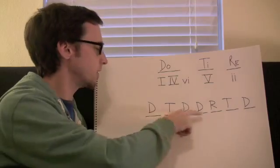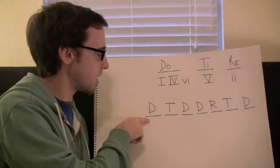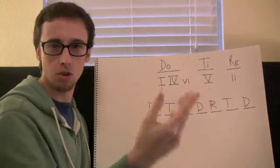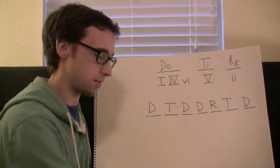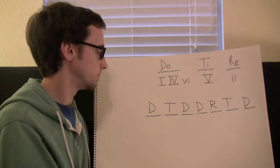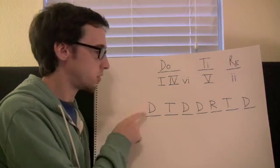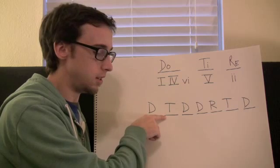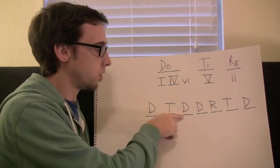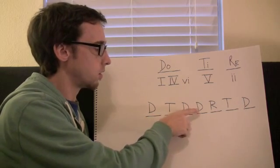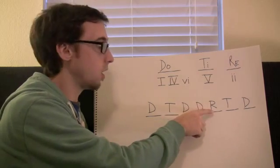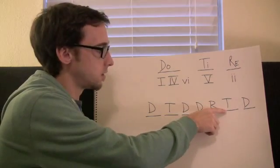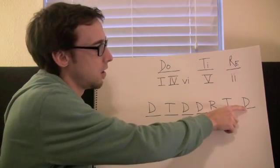Let's sing the DO-T-RAY line with the progression to make sure it's correct. We'll sing: DO, T, DO, DO, RE, T, DO. Listening along with the progression: DO, T... DO... DO. We'll sing RAY here. RAY, T... DO.